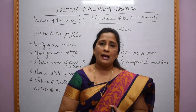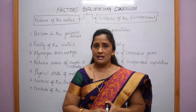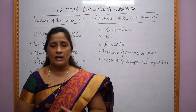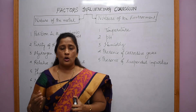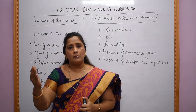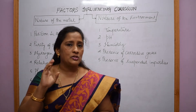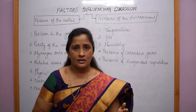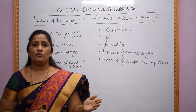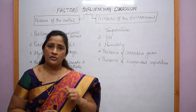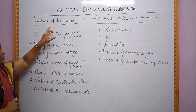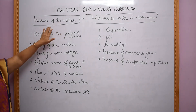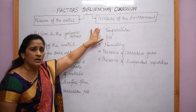In our previous videos, we have been elaborately discussing about corrosion, its mechanism and various types of corrosion. Corrosion is nothing but destruction of the metal when it is in contact with the environment. When thinking about corrosion, two things come to mind: the metal and the environment. So when discussing factors influencing corrosion, it has to be either the nature of the metal or the nature of the environment.